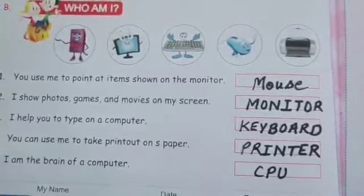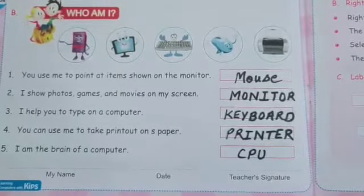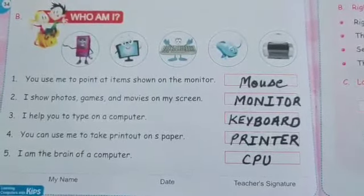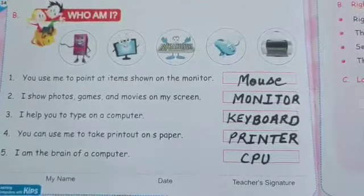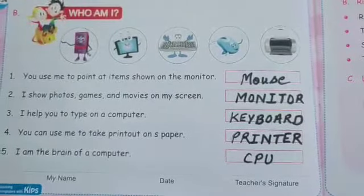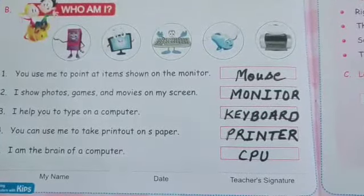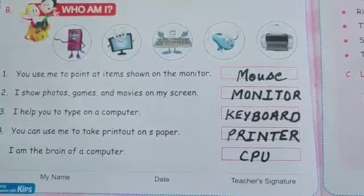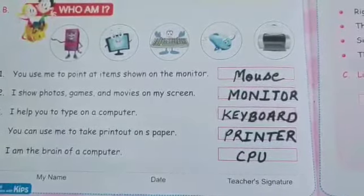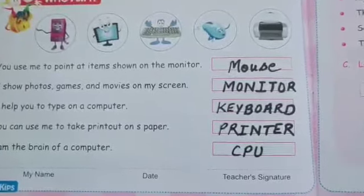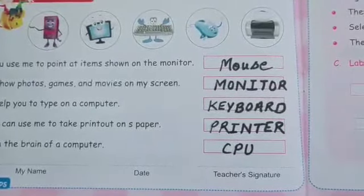Spelling of mouse: M-O-U-S-E. Spelling of monitor: M-O-N-I-T-O-R. Spelling of keyboard: K-E-Y-B-O-A-R-D. Spelling of printer: P-R-I-N-T-E-R. Spelling of CPU: C-P-U. And CPU stands for Central Processing Unit.